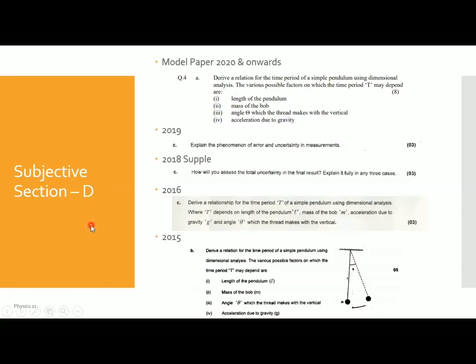Now moving to Section D, the long question portion. In the model paper, the question came from dimensions (8 marks). In the 2019 paper, the question came from uncertainty and error (3 marks). In the 2018 supplementary, the question came from uncertainty (3 marks). In 2016, the question came from dimensions (3 marks). In 2015, the question came from dimensions (5 marks).